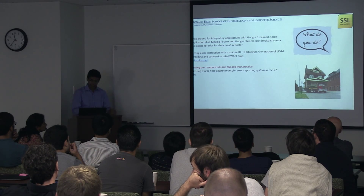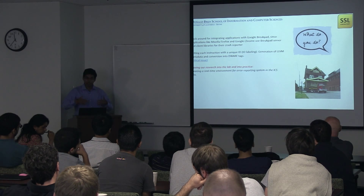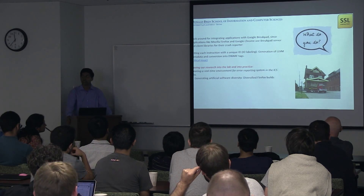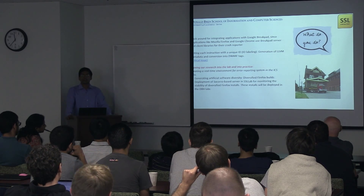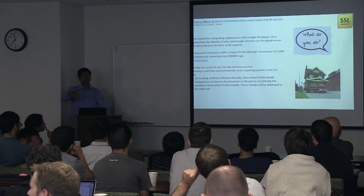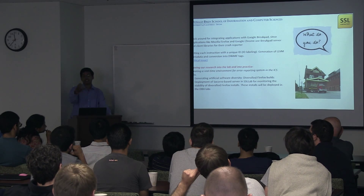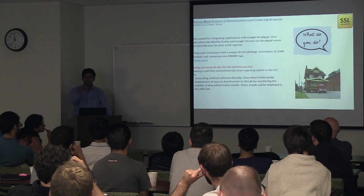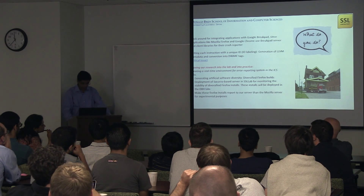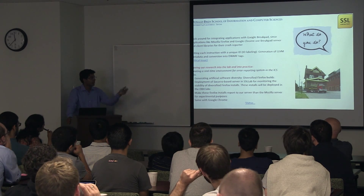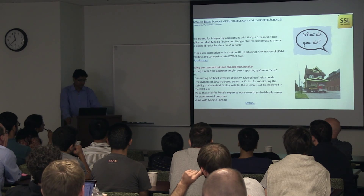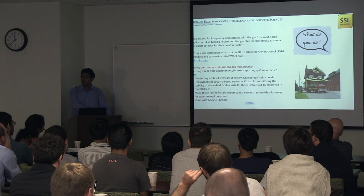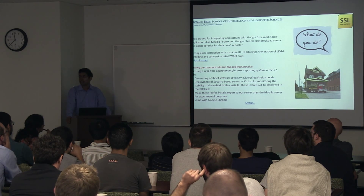We need to move our research into actual practice, so we created a real-time environment within our own lab. I started generating artificial software diversity by compiling Firefox with our multi-compilers. I deployed a software-based server in our lab that emulates the exact Mozilla server, which collects crash reports from our diversified binaries. I also had to hack on Firefox so that those installs report to my server and not the Mozilla server. The same thing will be done with Google Chrome, and we'll be testing this at the DBH labs, so we can monitor the stability of our diversified Firefox installs.